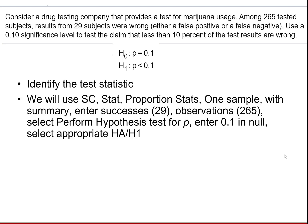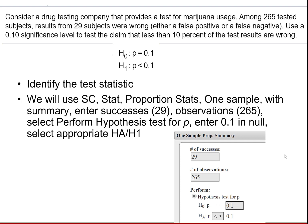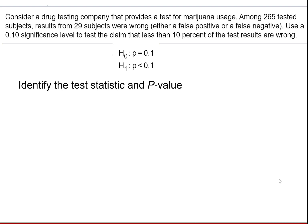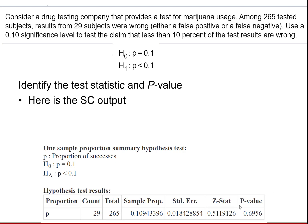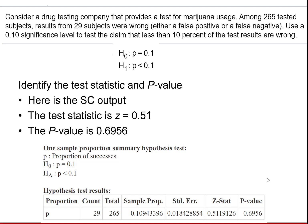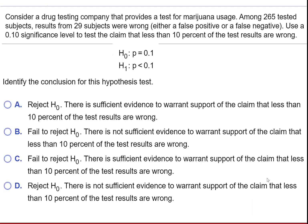Identify the test statistic. We're going to use StatCrunch and enter the number of successes: 29 subjects out of 265. In the Perform window, enter the null hypothesis as P equal to 0.1, then use the drop-down to specify the correct alternative, and hit Compute. Here's our output: the sample proportion was about 11%, our Z-score is about 0.51, and our p-value is 0.6956. We were using an alpha level of 0.1. Since our p-value is not less than 0.1, we fail to reject. There is insufficient evidence to support the claim that less than 10% of the test results are wrong.